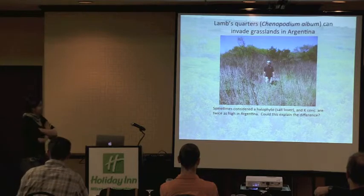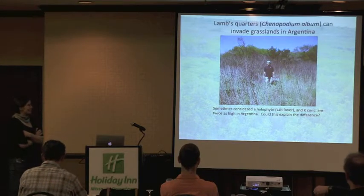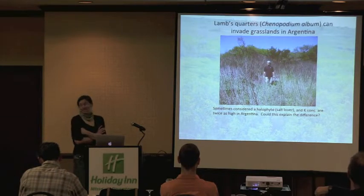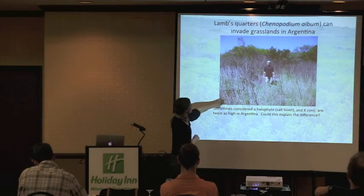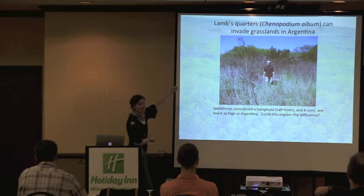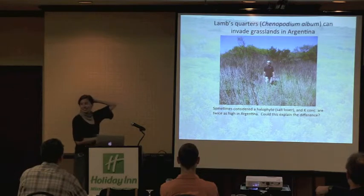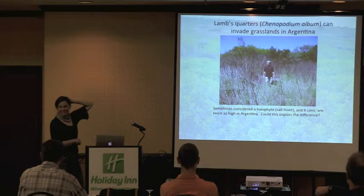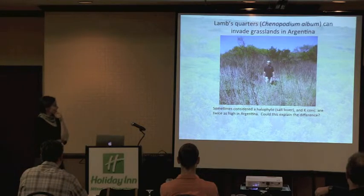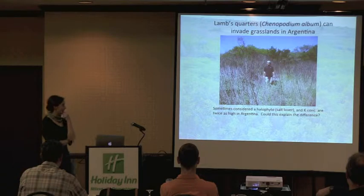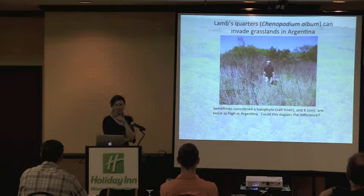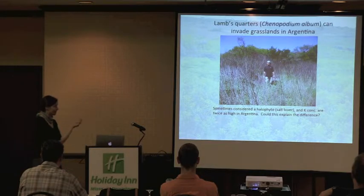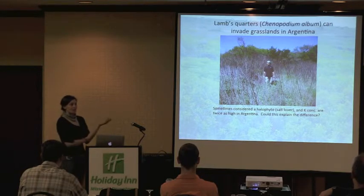One species that differs dramatically is lamb's quarters — a garden weed you can eat. In Argentina it invades native grasslands and grows taller than Dean Pearson. Interestingly, lamb's quarters is sometimes considered a halophyte — a salt lover. Both potassium and sodium were twice as high in Argentina compared to Montana. Could this explain why it invades there and not here? It's hard to know, but it opens possibilities for experimentation.